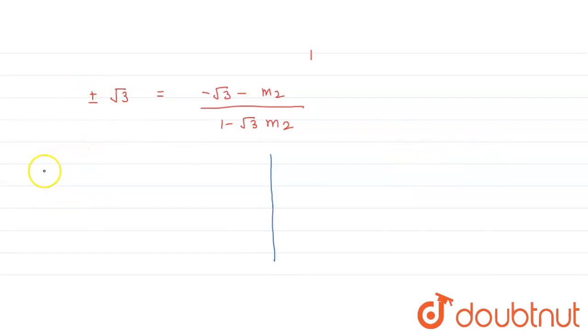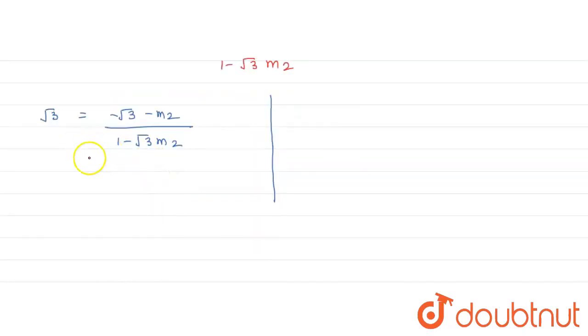In the first case, root 3 equals minus root 3 minus m2 upon 1 minus root 3 m2. Now cross multiply. So what we get? root 3 minus 3 m2 equals minus root 3 minus m2.